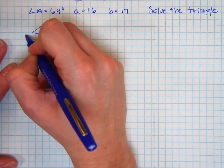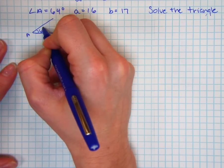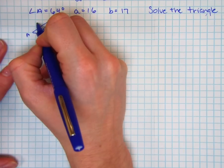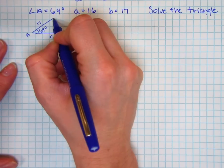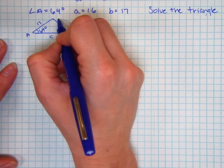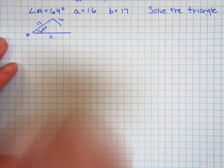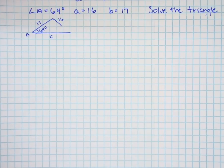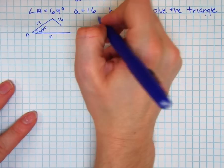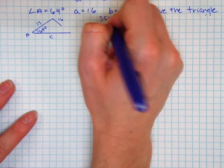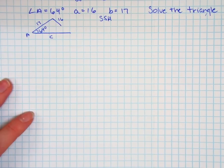And then I have angle A is 64 degrees, side B is 17, and side A is 16. I don't quite know how long this is yet, and notice I'm in this SSA triangle situation, so I need to test to figure out how many triangles I actually have.